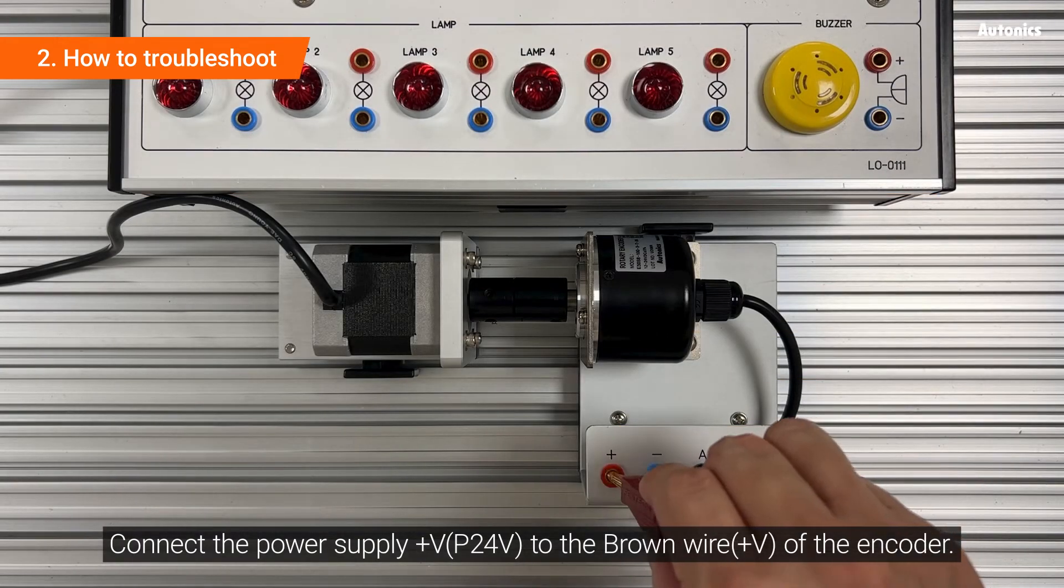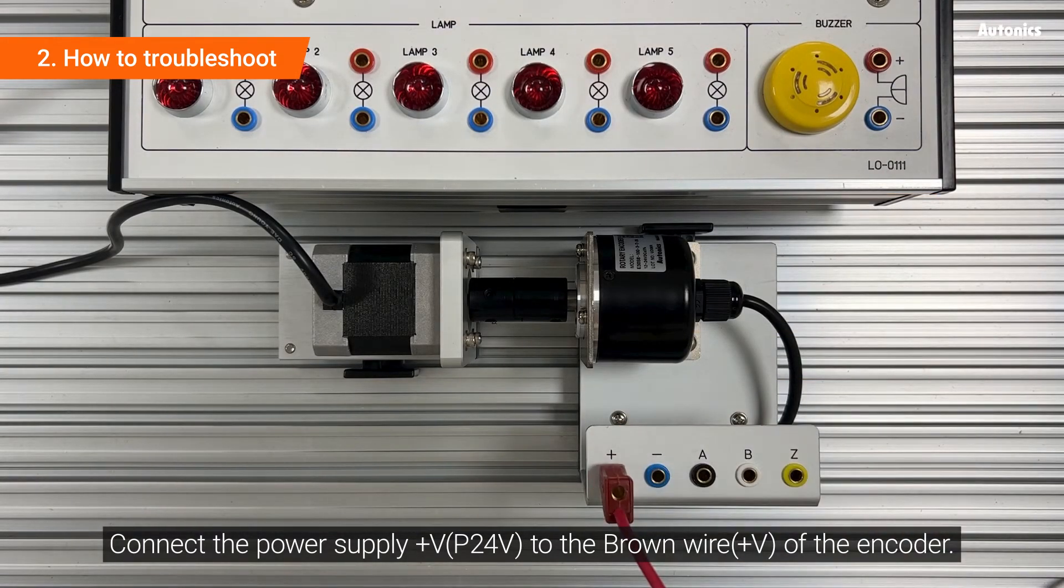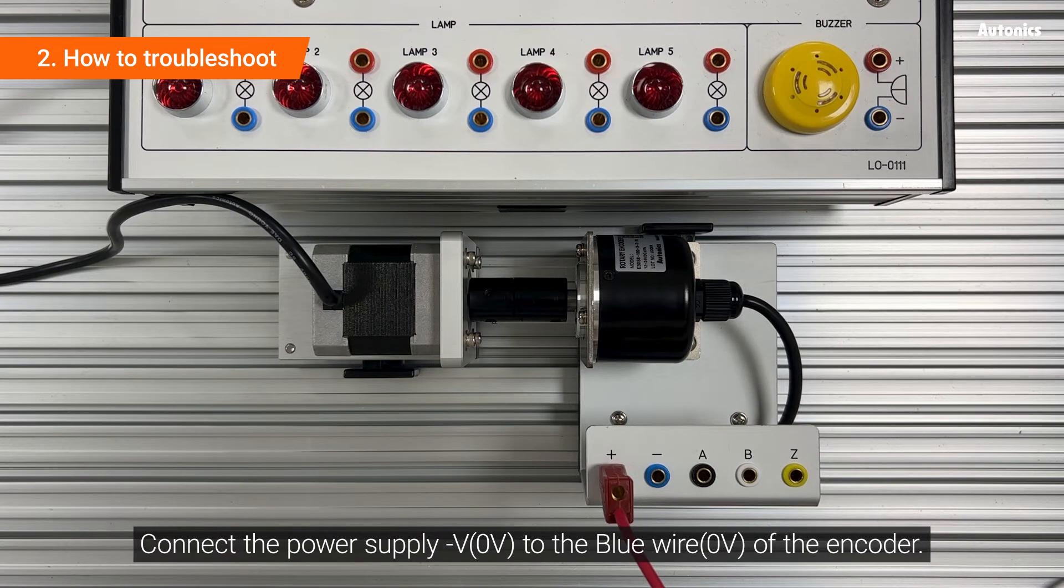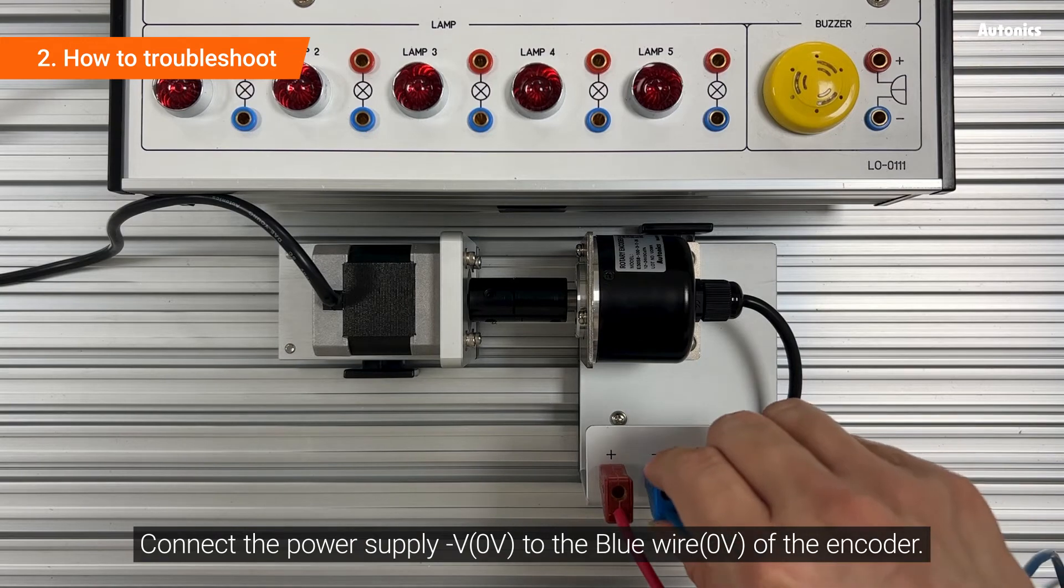Connect the power supply plus volt to the brown wire of the encoder. Connect the power supply minus volt to the blue wire of the encoder.